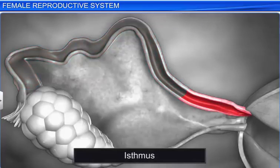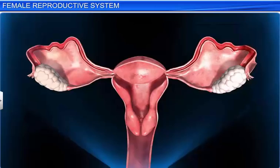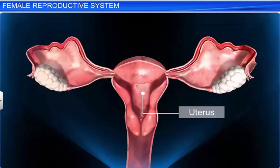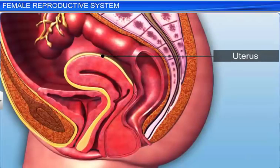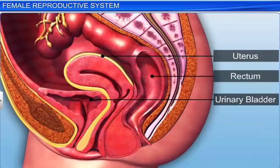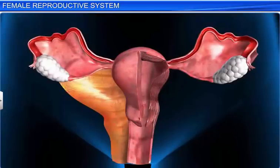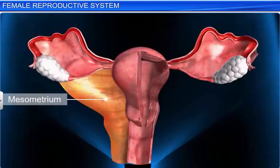The isthmus is a narrow and straight cavity, and it joins the uterus. The uterus is a hollow, pear-shaped, muscular organ and is highly distensible. It is situated in the pelvic cavity between the urinary bladder and the rectum. It is also known as the womb. It is supported by ligaments attached to the pelvic wall, known as mesometrium.